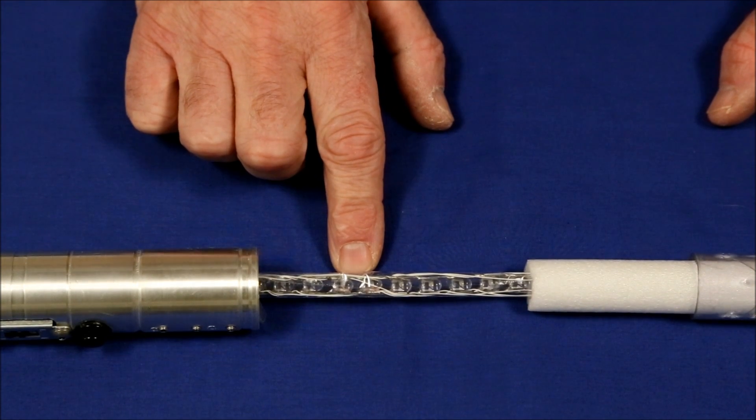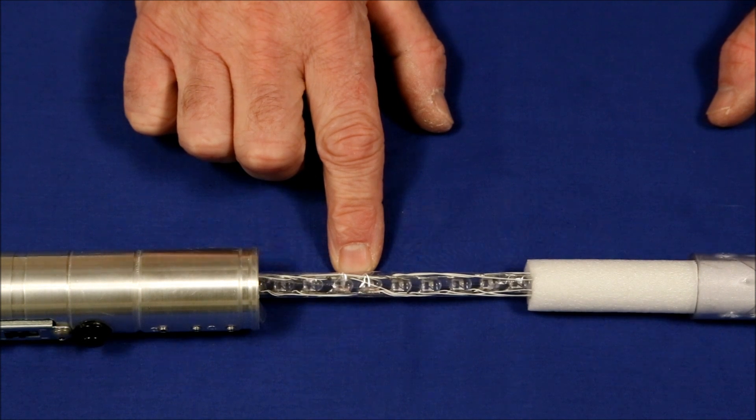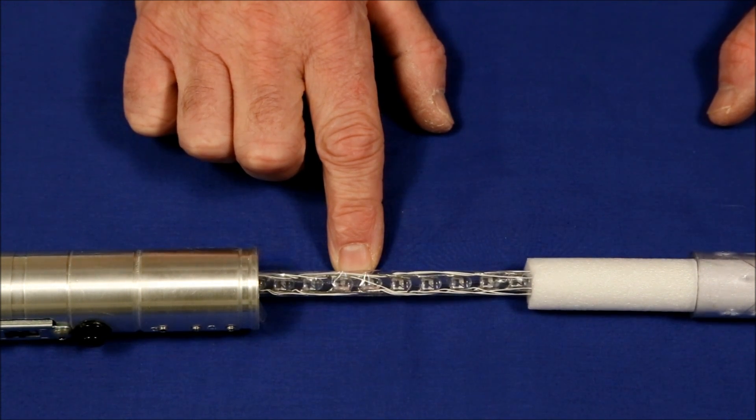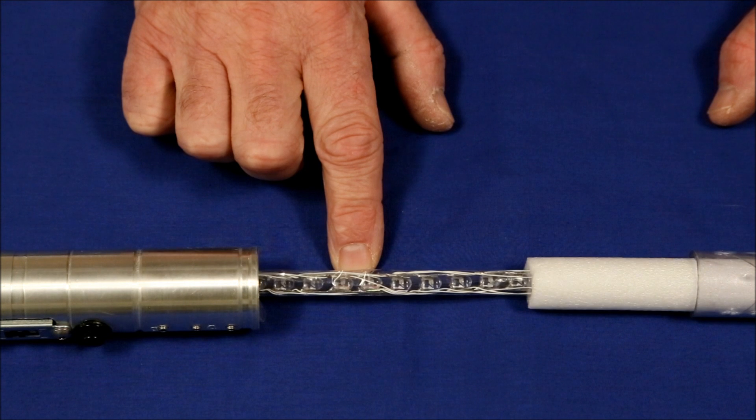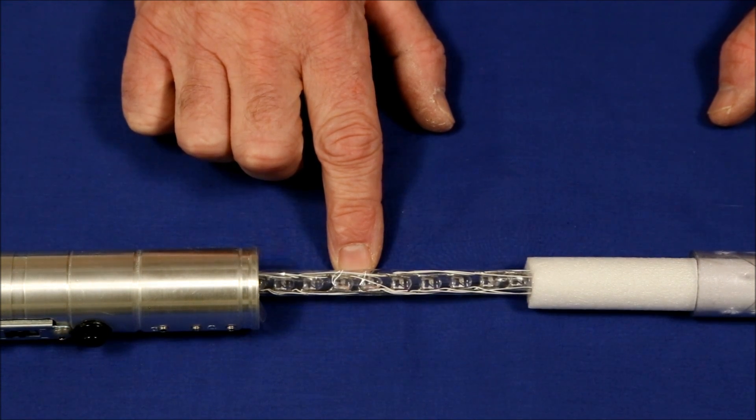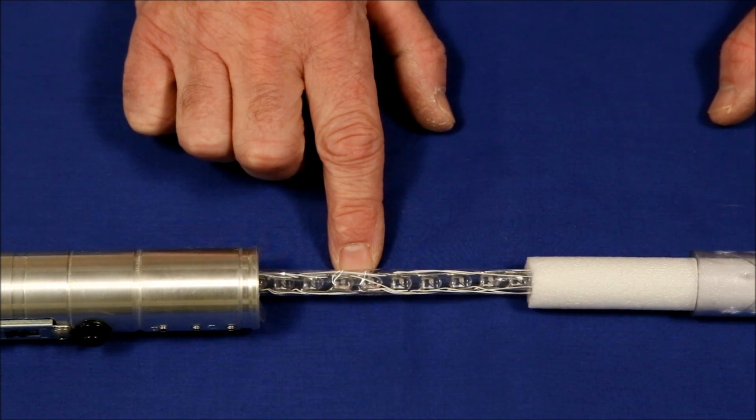To understand how Starfire is different from most string or component blade lightsabers, we need to look inside a traditional lightsaber and see how it's put together and where the losses of efficiencies occur.